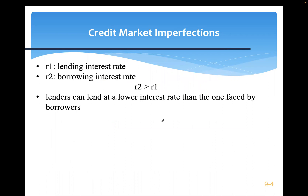Let's look at credit market imperfection through the lens of a model. We use R1 to denote the lending rate and R2 to denote the borrowing rate. R1 is the saving rate offered when you deposit money in a bank. R2 is the borrowing rate you face when borrowing for a car, house, or student loan. To summarize: lenders lend at a lower interest rate than the rate faced by borrowers.